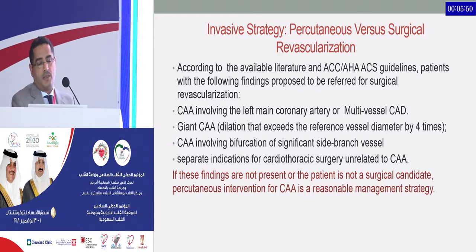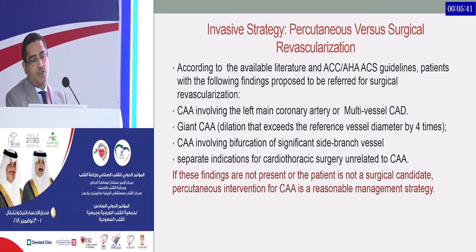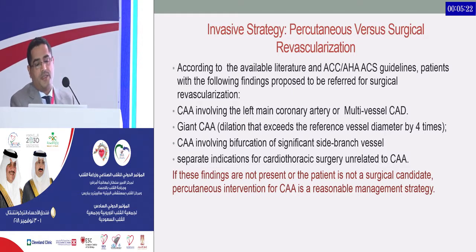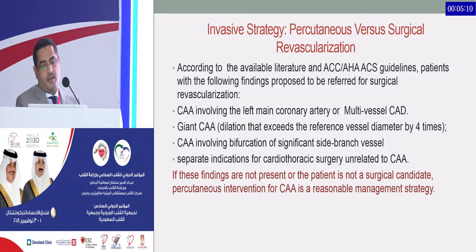If an invasive strategy is decided, should we proceed percutaneously or surgically? Surgery is preferred if there is left main disease or multivessel disease, giant coronary artery aneurysm exceeding four times the reference vessel diameter or more than 8 millimeters, ectasia involving bifurcation of a significant side branch, or a separate indication for thoracic surgery. If these findings are not present or the patient is not a surgical candidate, percutaneous intervention is a reasonable management strategy.